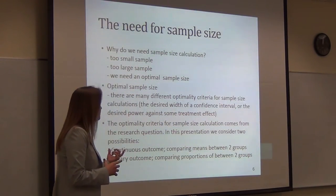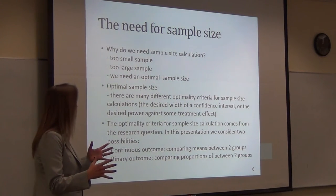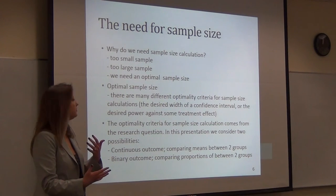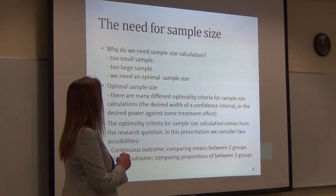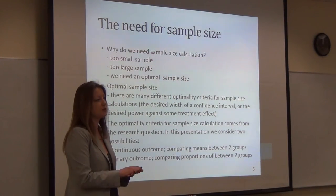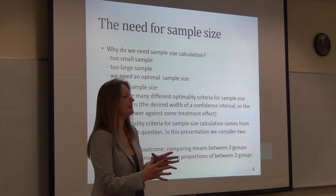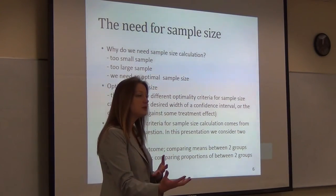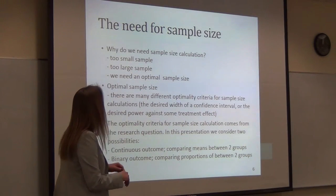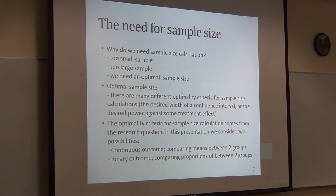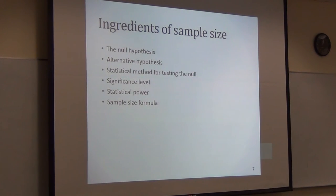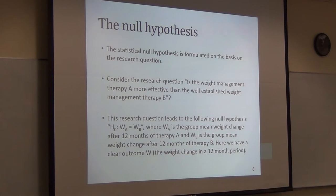The way we find the optimal sample size is to determine how wide you want your confidence interval to be and the desired power to detect your effect. This comes from your basic research question. Usually when we set up a consulting meeting, you think you have your research question, but sometimes you need to iron it out to find your analysis plan and null hypothesis. Today we'll look at two possibilities, covering null hypothesis, alternative hypothesis, statistical methods, significance level, power, and sample size forecast.